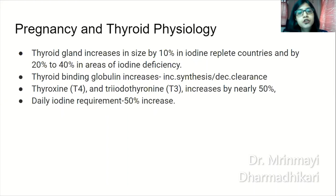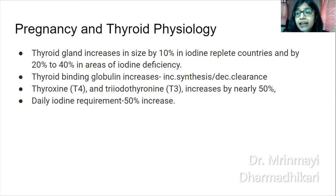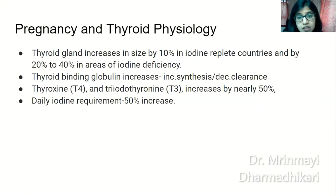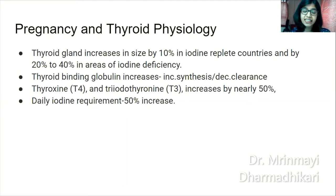What are the physiological changes which take place during pregnancy? The thyroid gland increases in size by 10% in iodine-replete countries and by 20 to 40% in areas of iodine deficiency — a normal physiological hypertrophy. Thyroid binding globulin increases due to increased synthesis and decreased clearance. T3 and T4 hormones also increase by nearly 50%, in conjunction with increased maternal needs. Daily iodine requirement also increases by 50%.